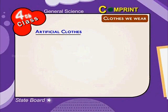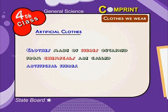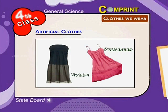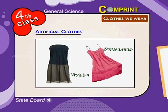Artificial clothes: Clothes made of fibers obtained from chemicals are called artificial fibers. For example, nylon, polyester, etc. Their texture is smooth, colorful and unfolded.